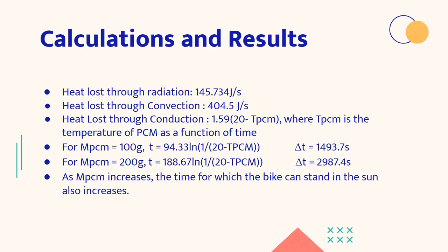So here is our calculation and results. We have calculated the heat loss due to conduction, convection and radiation. And we have calculated the time which is required for different masses of PCM, that is 100 grams and 200 grams. So as we can see, as the mass of PCM increases, the time for which the bike can stand in the sun also increases. We consider the time for which the bike can stand in the sun is the total time which is required by the PCM to fully melt, like from the time it starts increasing its temperature to the time the PCM fully melts. That time we have considered as the time for which the bike can stand in the temperature.